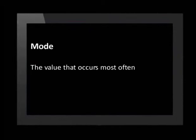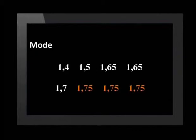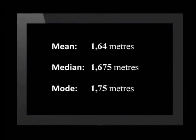The mode is the value that occurs most often — the value that has the highest frequency. In our netball team example, there were three players whose height was 1.75, so that is the most common value, or the mode. Looking at the three averages: the mean was about 1.64 metres, the median was 1.675 metres, and the mode was 1.75 metres.